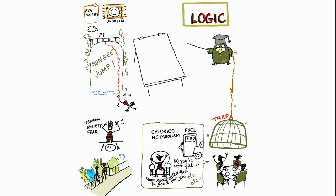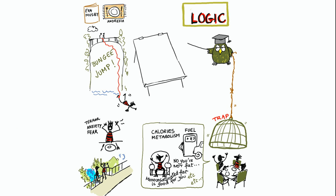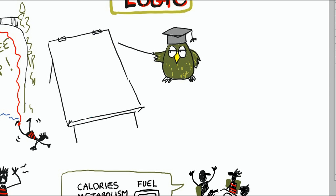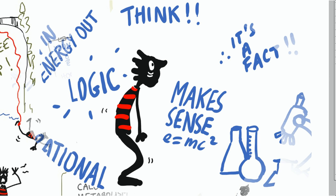So let's see what would happen if you're on this bungee jump and your instructor goes, go on, take your jump and you go, how do I know that the cord won't break? And your instructor brings out a whiteboard and gives you a mathematical formula involving Young's modulus of elasticity and explains to you